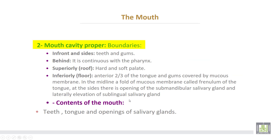The second part is the mouth cavity proper, bounded in front and sides by the teeth and gums, and behind it is continuous with the fauces. Superiorly it is bounded by the hard and soft palate. Inferiorly, the floor is formed by the anterior two-thirds of the tongue and the gums covered by mucous membrane. In the midline there is a fold of mucous membrane called the frenulum of the tongue.